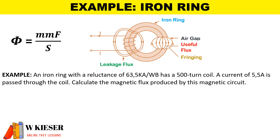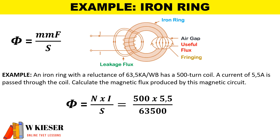In this example, an iron ring with a reluctance of 63,500 amps per Weber has a 500-turn coil, and a current of 5.5 amps is passed through the coil. Calculate the magnetic flux produced. We manipulate the formula: flux equals N multiplied by I, divided by reluctance — that is 500 turns × 5.5 amps ÷ 63,500. Therefore the flux generated will be 43 milliweber.